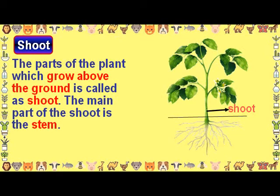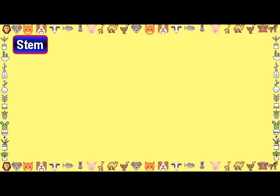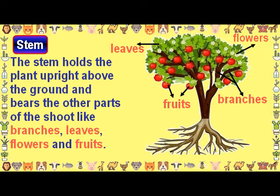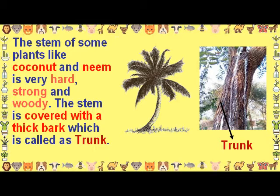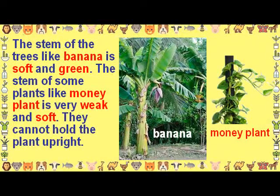Shoot: The parts of the plant which grow above the ground are called the shoot. The main part of the shoot is the stem. The stem holds the plant upright above the ground and bears other parts of the shoot like branches, leaves, flowers, and fruits. The stem of some plants like coconut and neem is very hard, strong, and woody, covered with a thick bark called the trunk. The stem of trees like banana is soft and green. The stem of some plants like money plant is very weak and soft and cannot hold the plant upright.